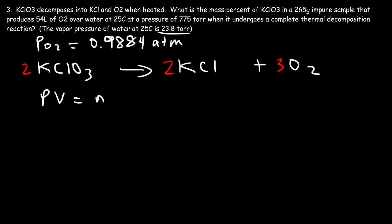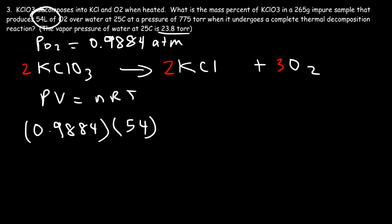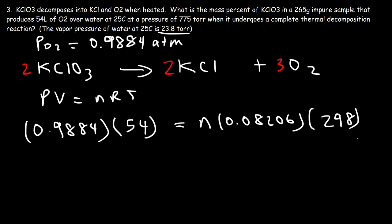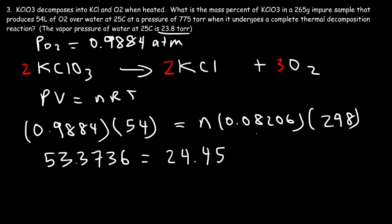Using PV = nRT: P is 0.9884 ATM, V is 54 liters, R is 0.08206, and T is 25 + 273 = 298 Kelvin. So 0.9884 × 54 = 53.3736, and 0.08206 × 298 = 24.454. Dividing gives n ≈ 2.183 moles of O2.